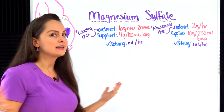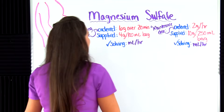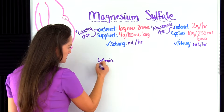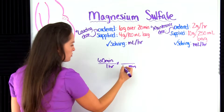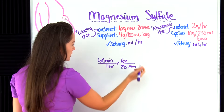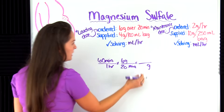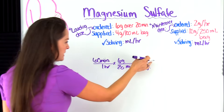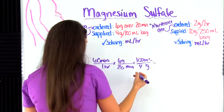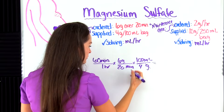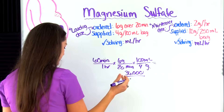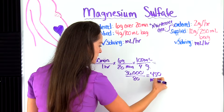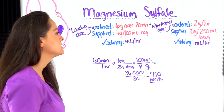For the loading dose, we start with 60 minutes over one hour to get our hour conversion. Then we bring over 20 minutes with six grams of the loading dose — that cancels out minutes. We bring grams over and plug in the bag: four grams per 100 mL — that cancels out grams. We have milliliters per hour. Multiplying the top gives us 36,000; the bottom gives us 80. Dividing: 36,000 divided by 80 gives us 450 milliliters per hour for the loading dose.